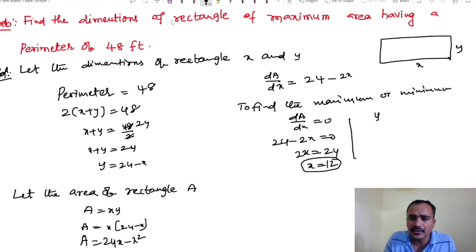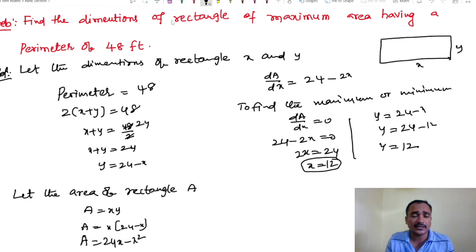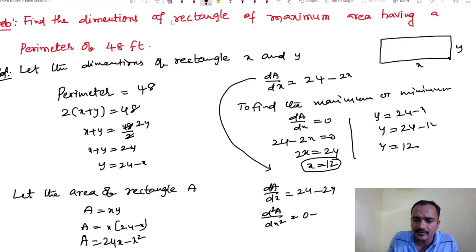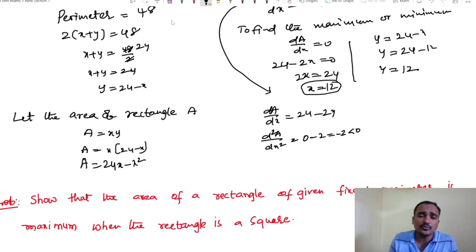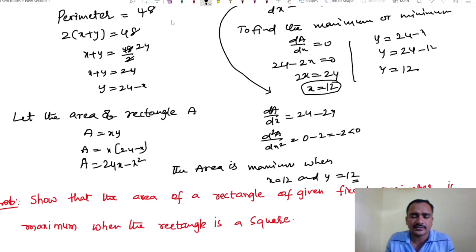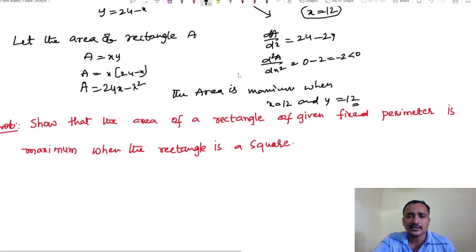Now find y: y equals 24 minus x, y equals 24 minus 12, y equals 12. For the second derivative: dA/dx equals 24 minus 2x, so d²A/dx² equals minus 2, which is less than 0. Therefore the area is maximum when x equals 12 and y equals 12. Practice carefully — there are some tricks worth knowing for these problems.